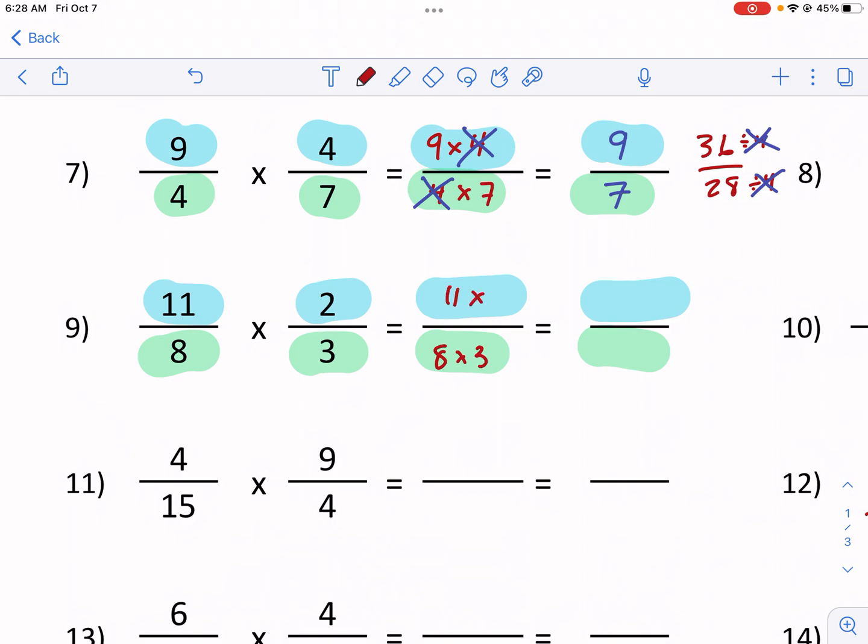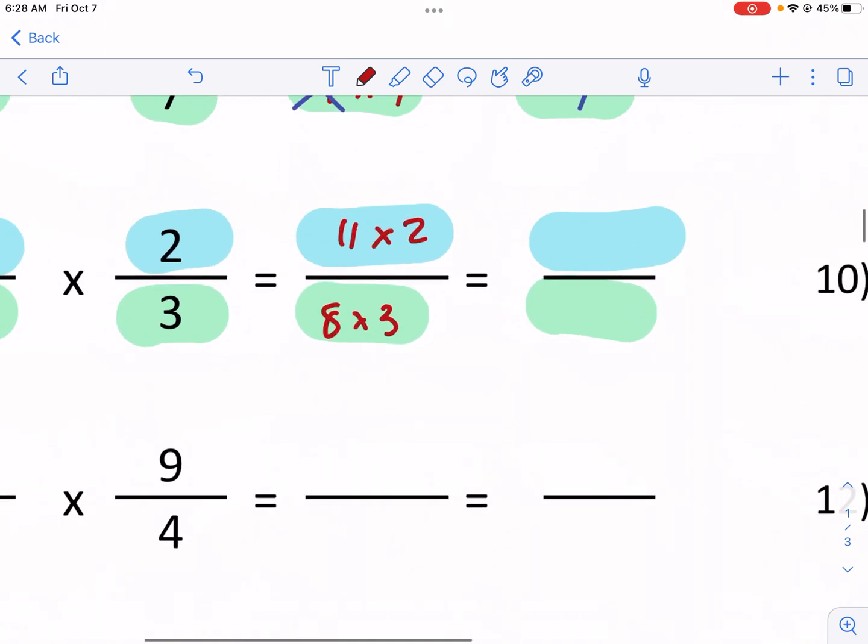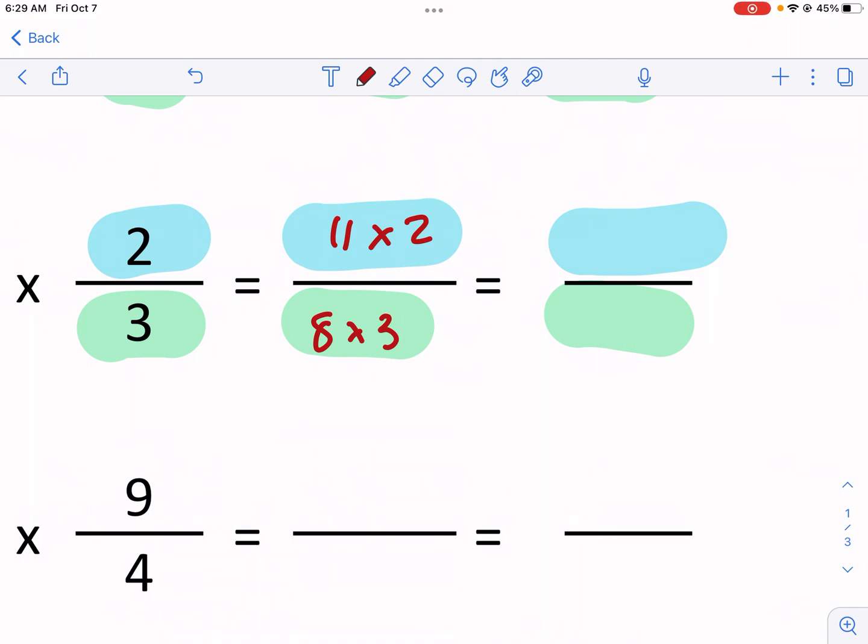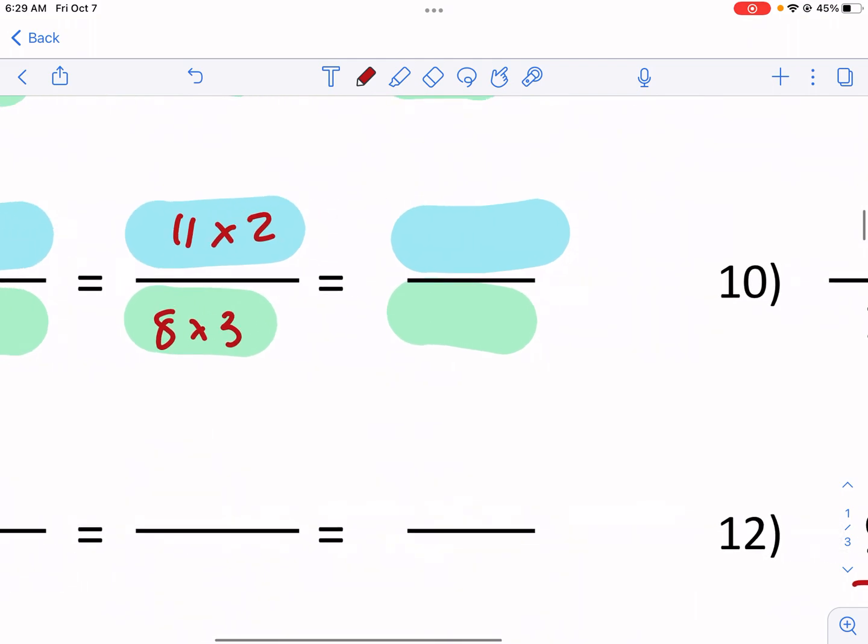Now you're probably thinking, oh, there's no number that's the same as in the top and the bottom. Well, let's see what happens. We're going to get 22 over 24. They're both even numbers. So you know they have at least a factor of two that you could divide.